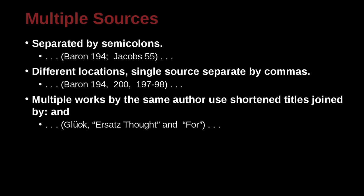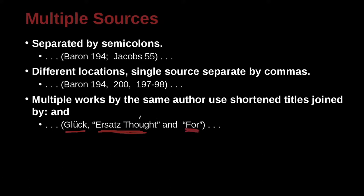Authors use shortened titles joined by the word and. So for example, this is the author. This is one paper. This is another paper. These are two different papers. In APA, we would use the year, the date. But in MLA, we don't use the date. We use the name of the paper.